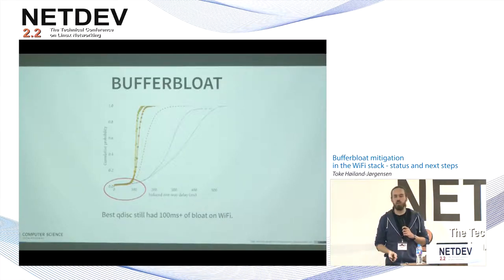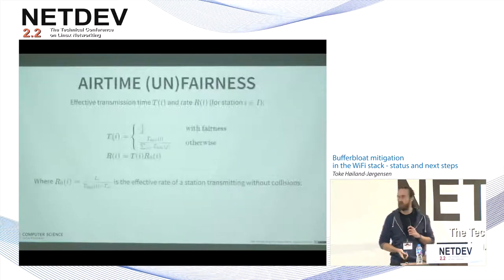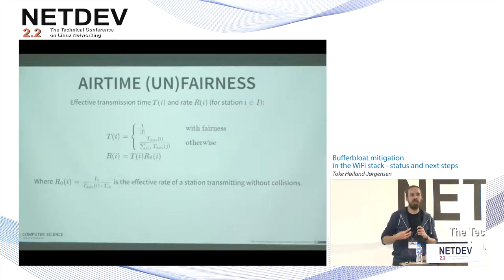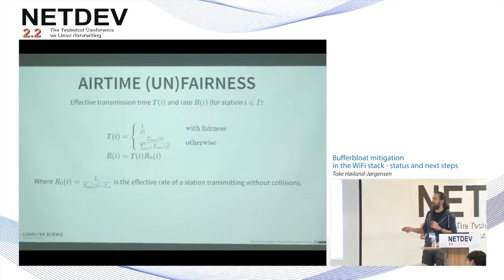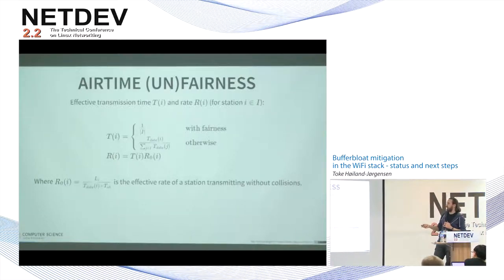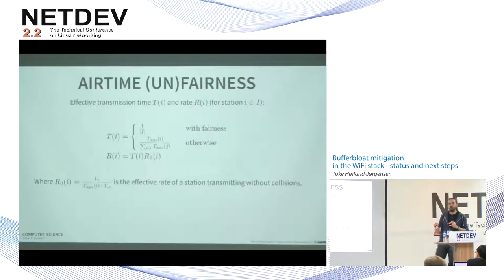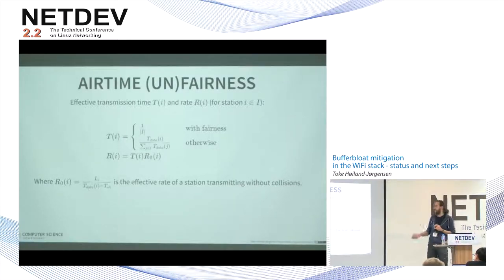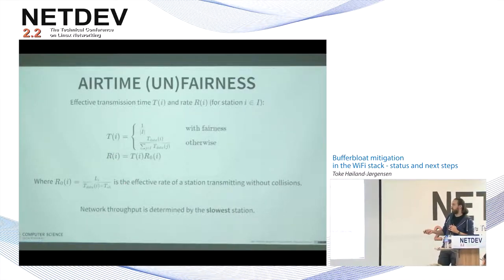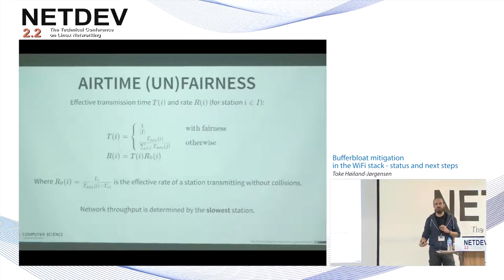The other thing we looked at is airtime fairness. In the 802.11 protocol, by default it will provide throughput fairness, where the time spent transmitting to each device depends on packet count. What we want instead is airtime fairness, because the scarce resource is the time spent transmitting on the air. With throughput fairness, the whole network goes at the rate of the slowest station.